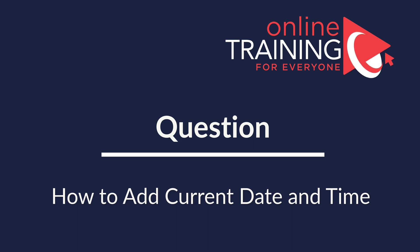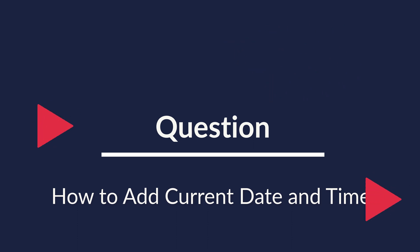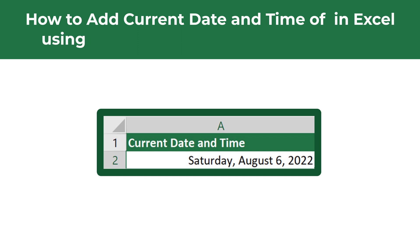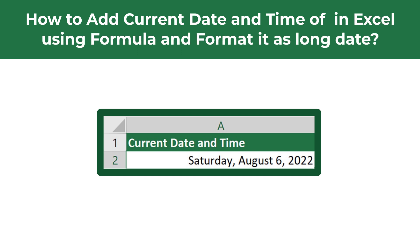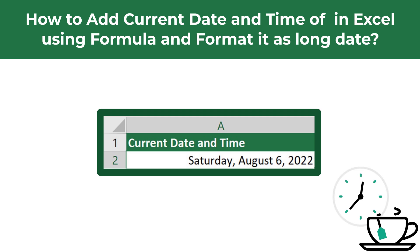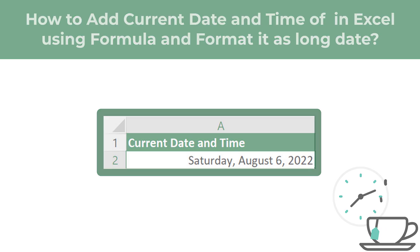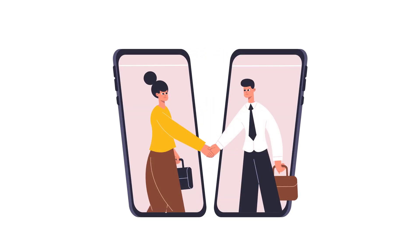Here's an interesting Microsoft Excel test question which tests your knowledge of Excel formulas. You need to show how to add the current date and time in Microsoft Excel using a formula and then format it as long date. Do you know how to do it? Give yourself 5 to 10 seconds to see if you can come up with the formula, and I am going to move forward and show you the solution.